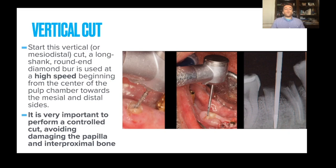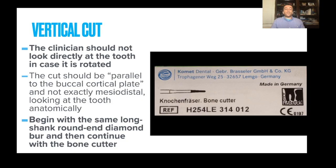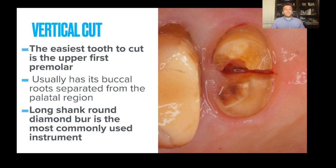Perform the vertical cut in a controlled manner, avoiding damage to any papilla or interproximal bone. The clinician should look directly at the tooth in case it's rotated — the cut should be parallel to the buccal cortical plate and not exactly mesiodistal, because every tooth has a different anatomy. Continue with the bone cutter burr after the long shank round diamond. One of the easiest teeth to cut is the upper first premolar, naturally because it has buccal and palatal roots separating from each other.